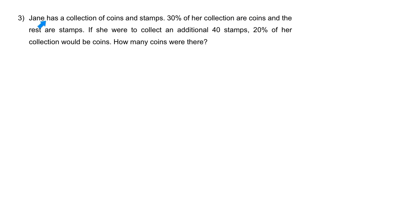Question 3. Jane has a collection of coins and stamps. 30% of her collection are coins, and the rest are stamps. If she were to collect an additional 40 stamps, 20% of her collection would be coins. How many coins were there? Essentially, the question is saying at the beginning, 30% of her collection are coins, but after adding 40 stamps, that percentage decrease to 20%. We must be mindful that the number of coins stays the same throughout the whole question, yet the percentage decrease.